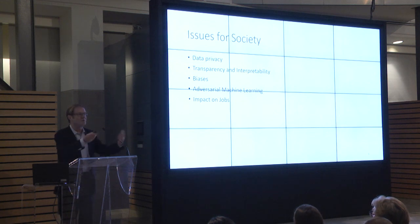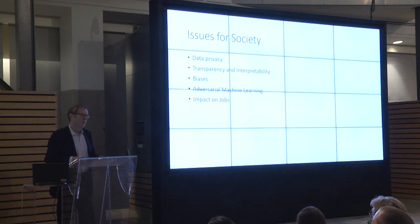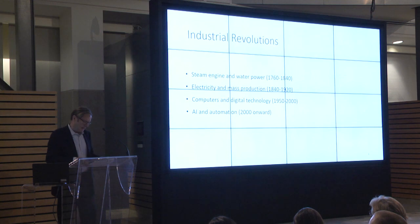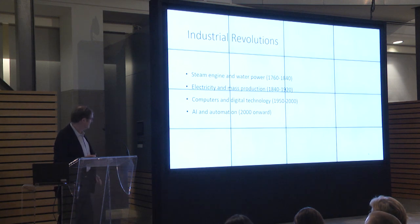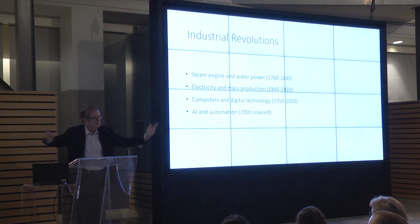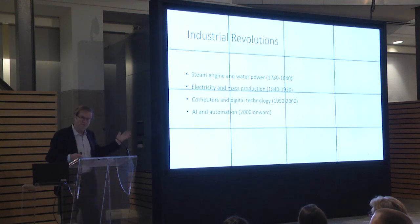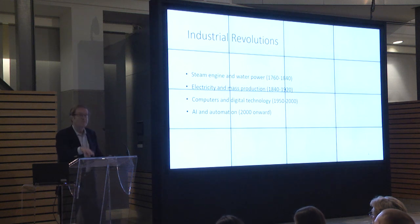Finally, everybody talks about the impact of AI on jobs — are we all going to have a lot fewer jobs? What we're in now is the fourth industrial revolution. The first was steam engines and water power, then electricity and mass production, then computers and digital technology, and now it's AI and automation. Each time, people said there would be massive job losses and society would never be the same — and certainly there was disruption. Some jobs were lost, but others were created.